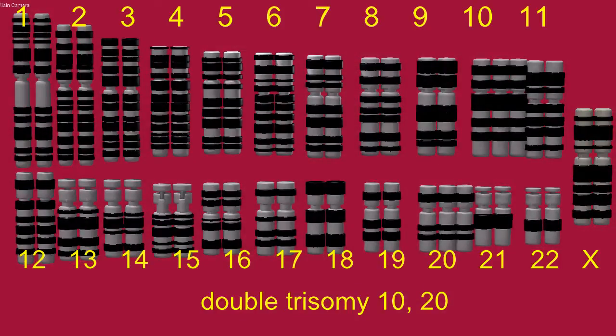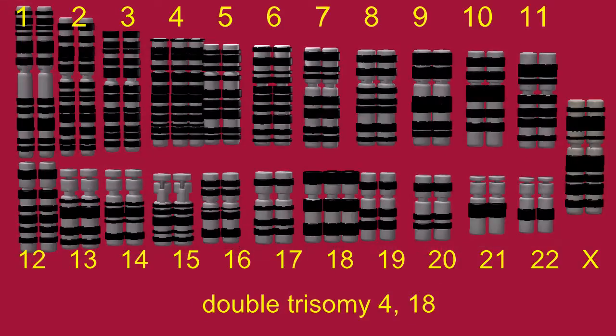The double trisomy 20,10 possesses extra copies of both chromosome 20 and 10. The double trisomy 4,18 possesses extra copies of chromosome 4 and 18.